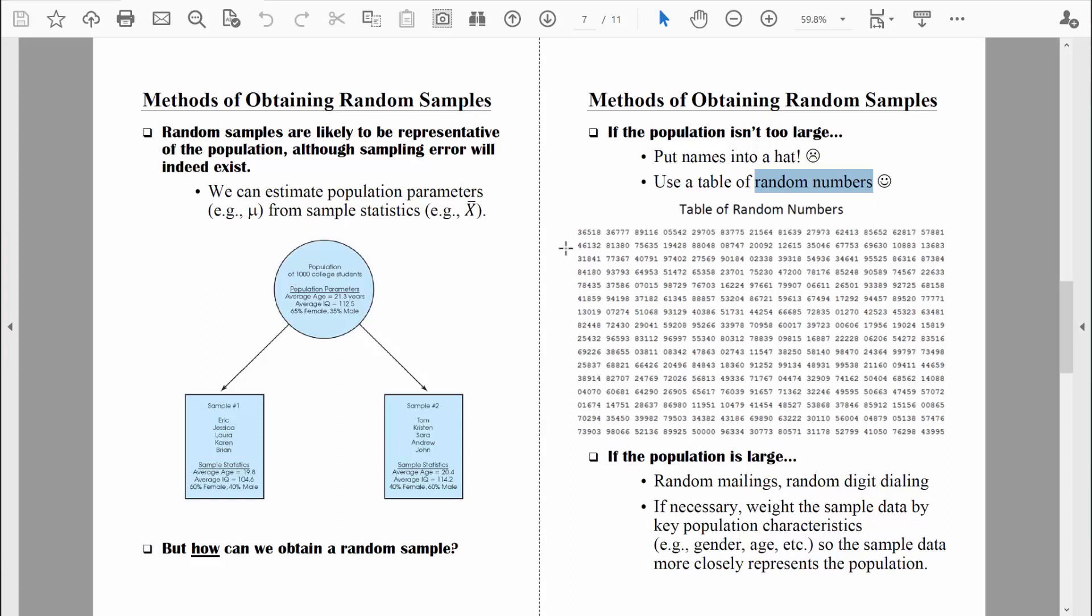Imagine that we have a class of 35 students, and for whatever reason, we can't measure all those 35 students because there's just too many. And we want to select a random sample of five students. So here's how we can use the table of random numbers. We're going to give every single one of those students a unique number.